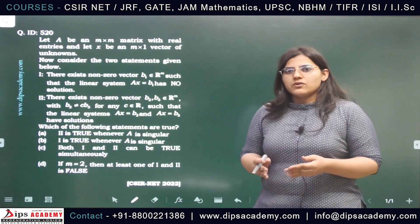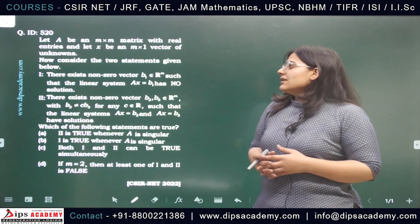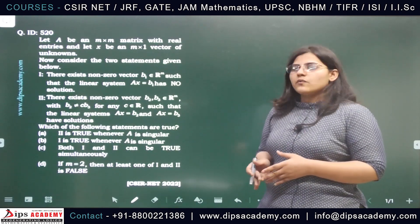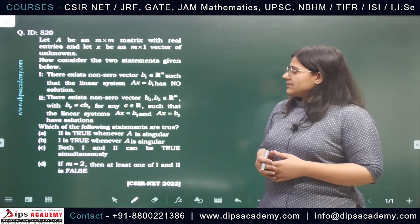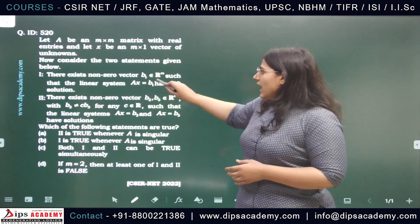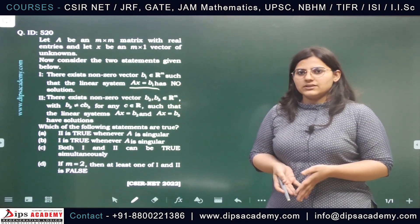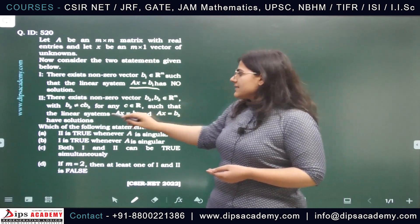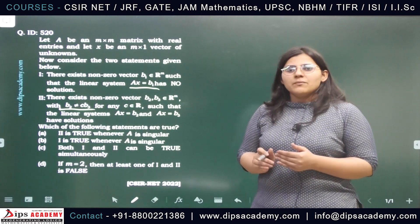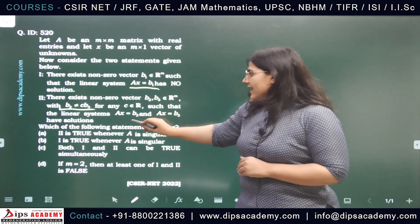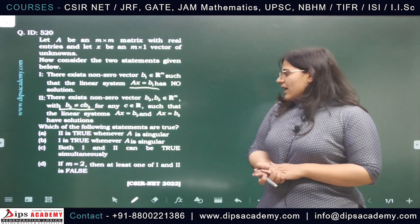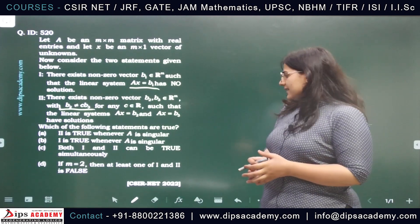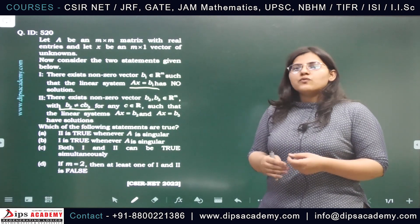In this question, we are given an m×m matrix, an m-column vector, and two statements. This is a multiple select question, meaning more than one option can be true. Statement 1: there exists a nonzero vector b1 in R^m such that the system Ax=b1 has no solution. Statement 2: there exist two nonzero vectors b2 and b3 in R^m such that b2 ≠ cb3 (i.e., b2 and b3 are linearly independent) and both Ax=b2 and Ax=b3 have solutions. Option A says statement 1 is true when A is singular, option B says statement 2 is true when A is singular, option C says both can be true simultaneously, and option D says for m=2, at least one of the two statements must be true.